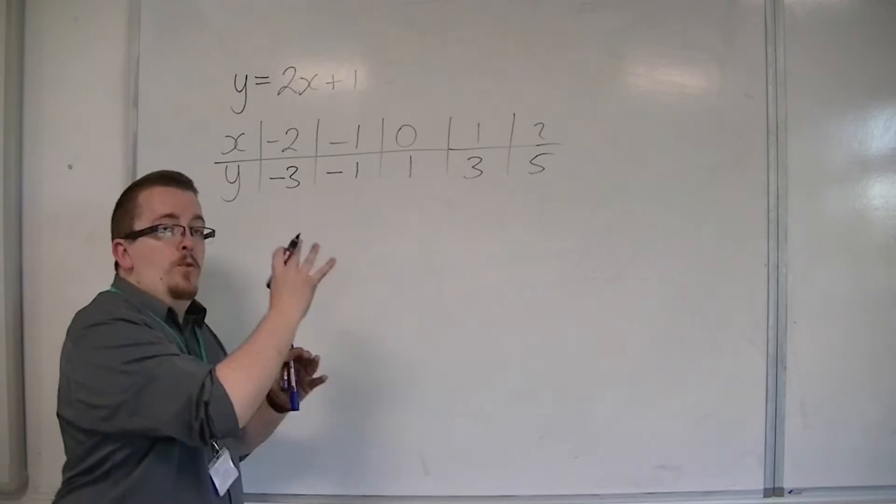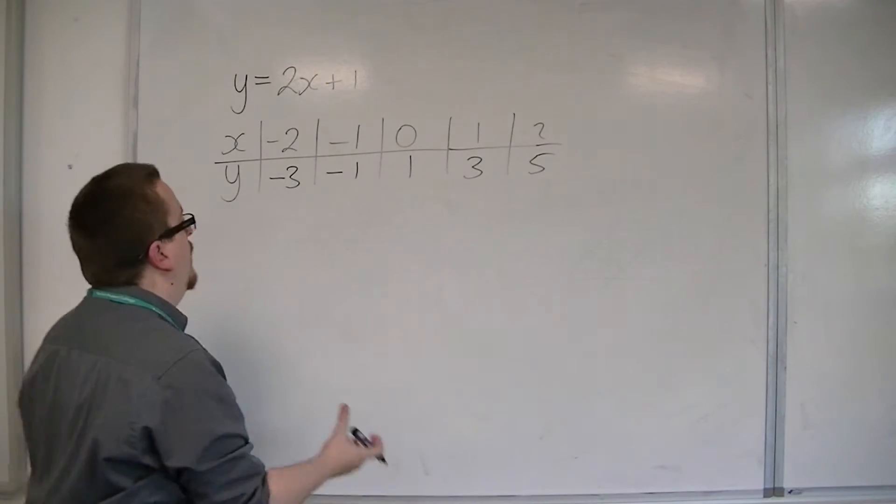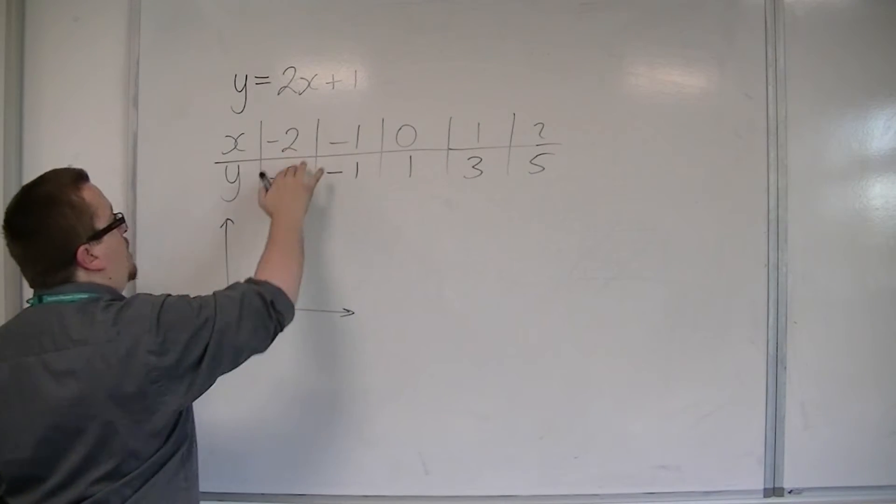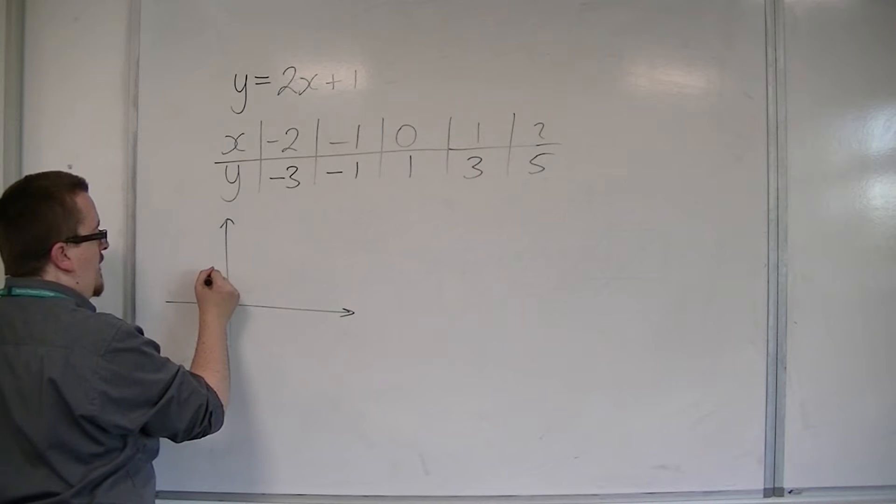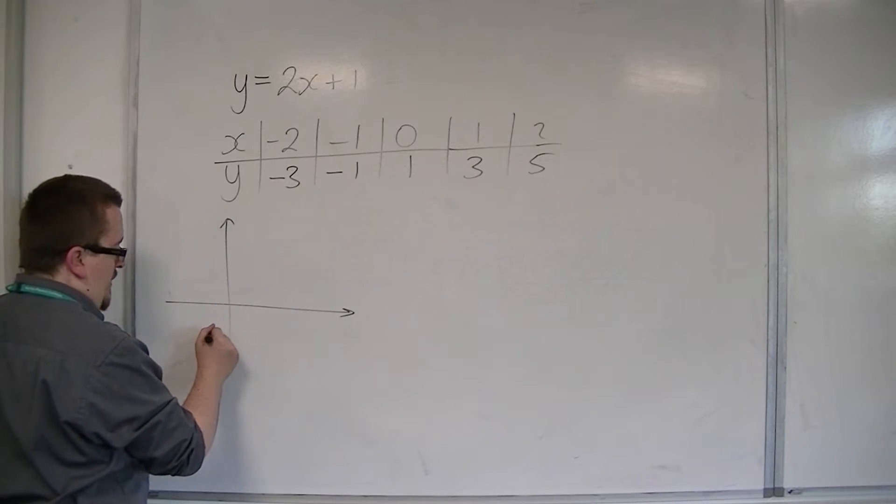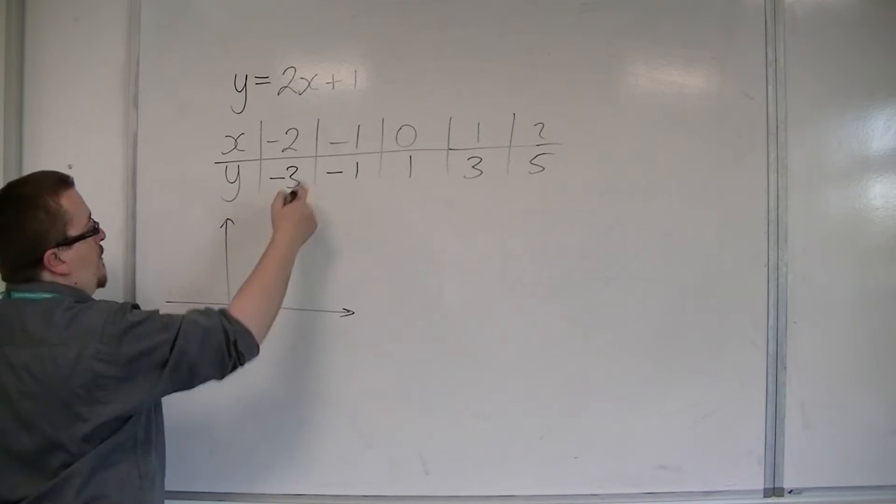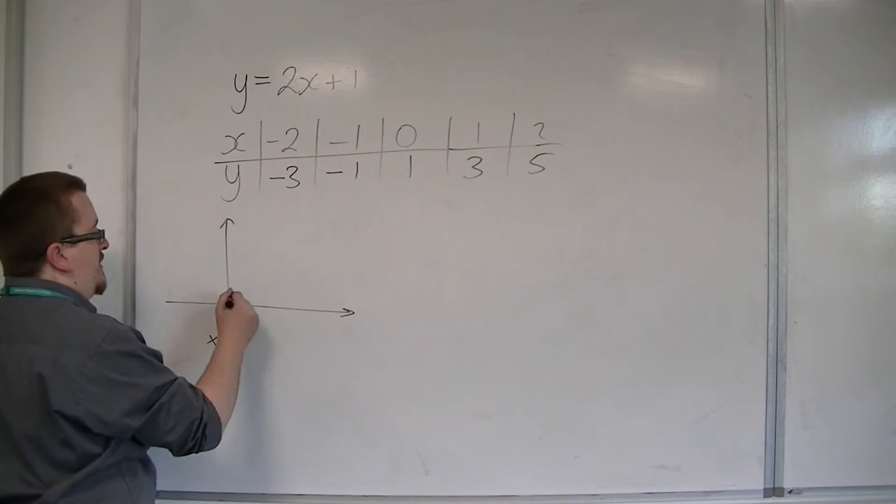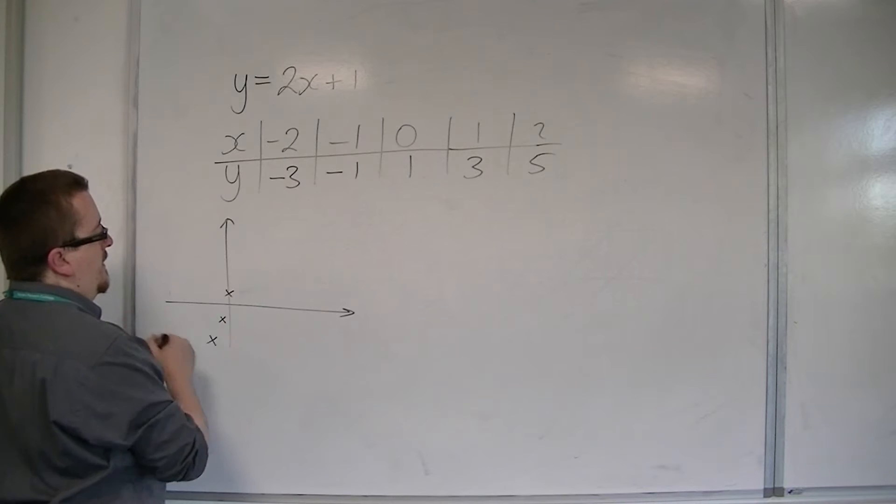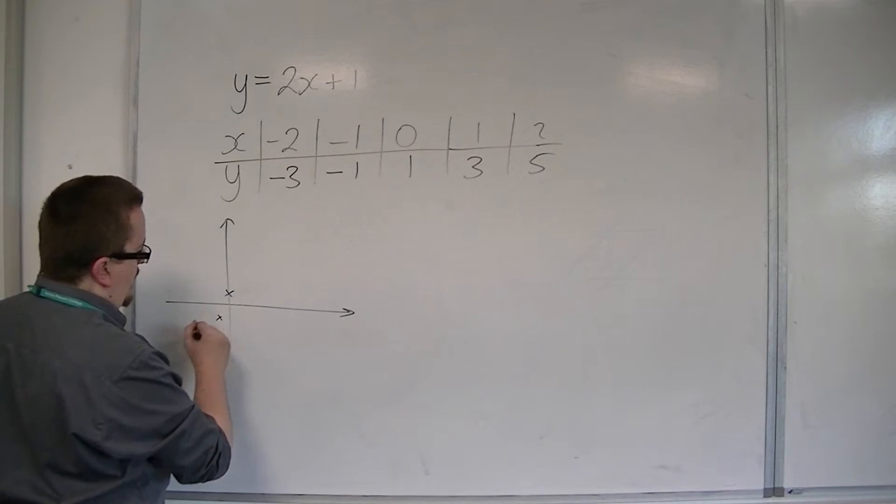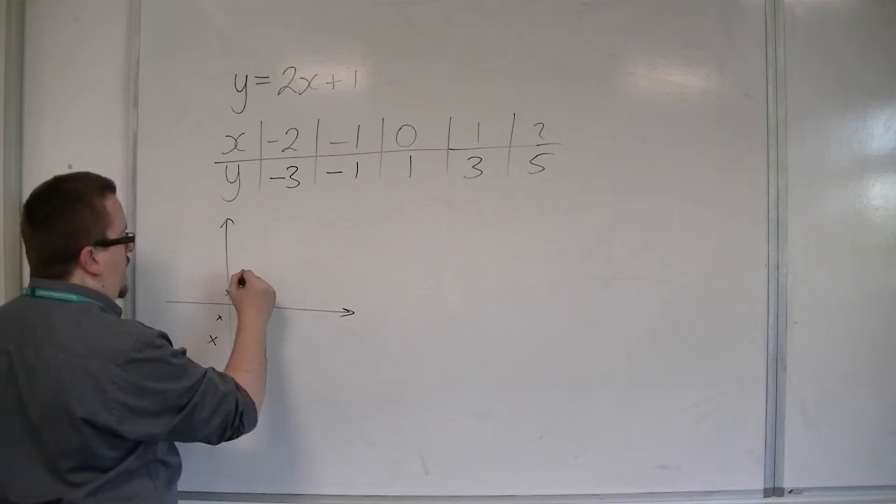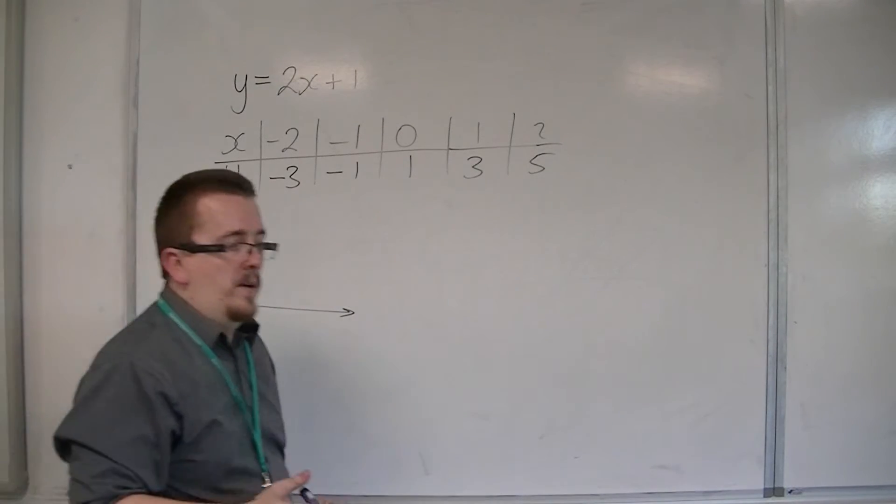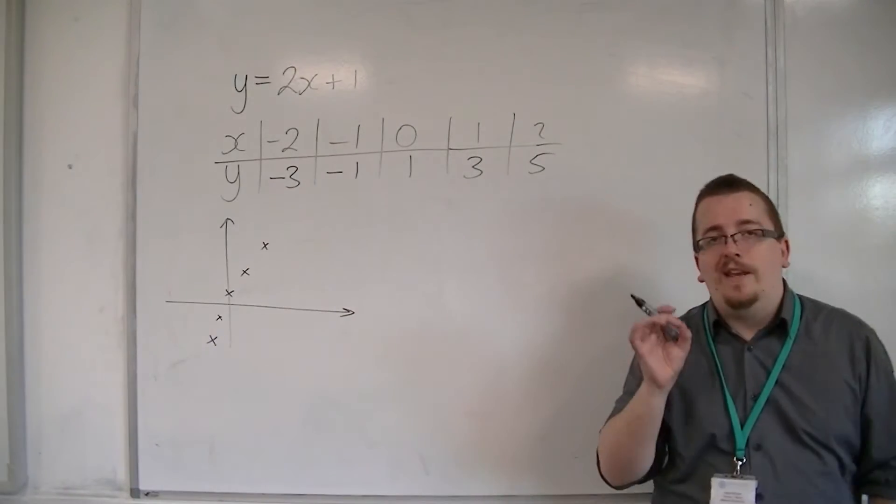So then you would plot those points on an xy grid. You would go minus 2, minus 3 is here. Oh sorry, minus 2, minus 3 is down here, rather. There we are. Then we'd go minus 1, minus 1. Okay, it would be somewhere there. Then 0, 1 would be there. So I'll try and get these in a nice straight line. And then 1, 3, and the next point, 2, 5, for example. And you'd be able to plot the points exactly.